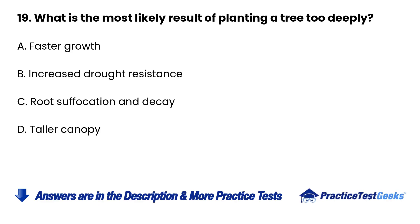Question 19. What is the most likely result of planting a tree too deeply? A. Faster growth.